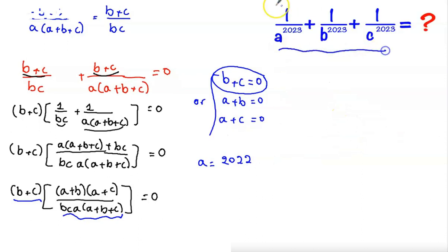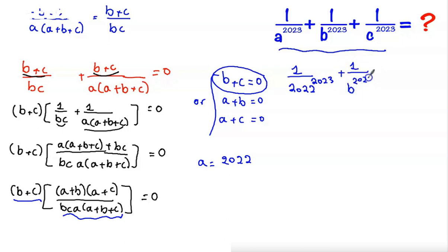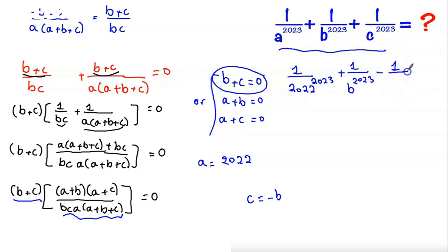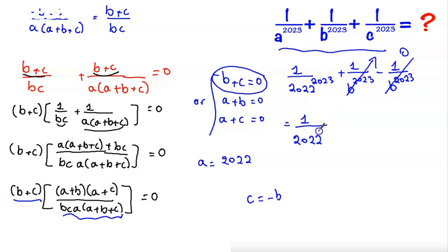We need to find 1/a^2023 + 1/b^2023 + 1/c^2023. With a = 2022, we have 1/a^2023 = 1/2022^2023. Since b+c = 0, we have c = −b, so 1/c^2023 = −1/b^2023. Therefore 1/b^2023 and 1/c^2023 cancel, giving the final answer: 1/2022^2023.